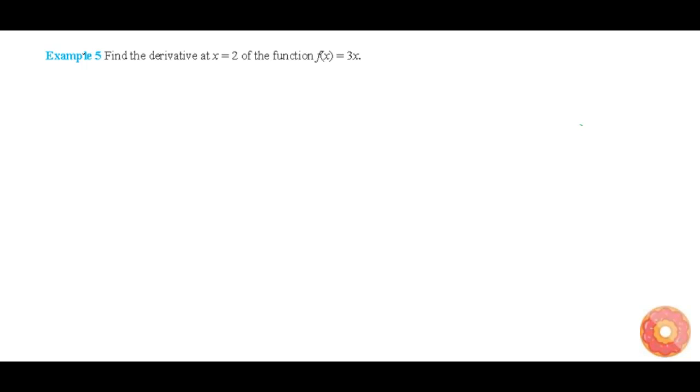In this question we are going to find out the derivative of the function at x equals to 2. Now the formula to find out the derivative is f dash of x at x equals to a is given as limit h tends to 0, f of a plus h minus f of a by h.